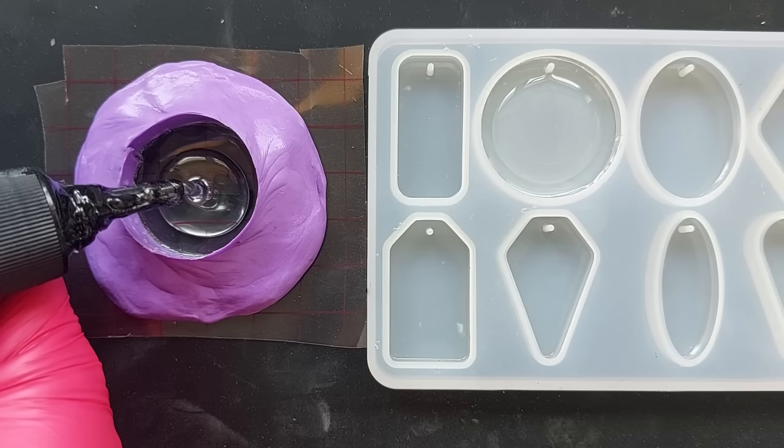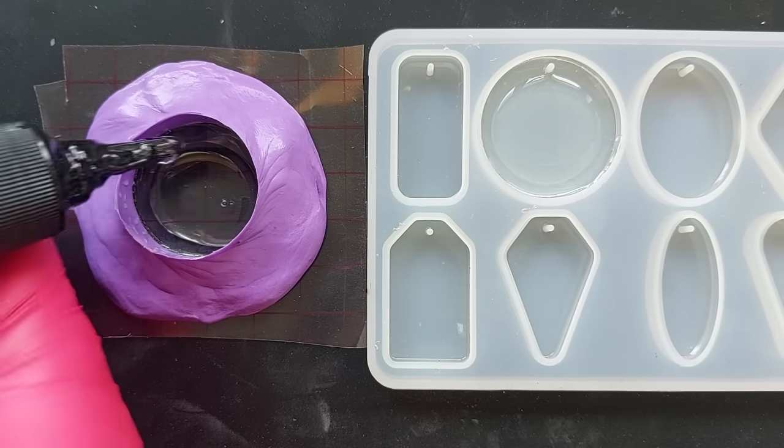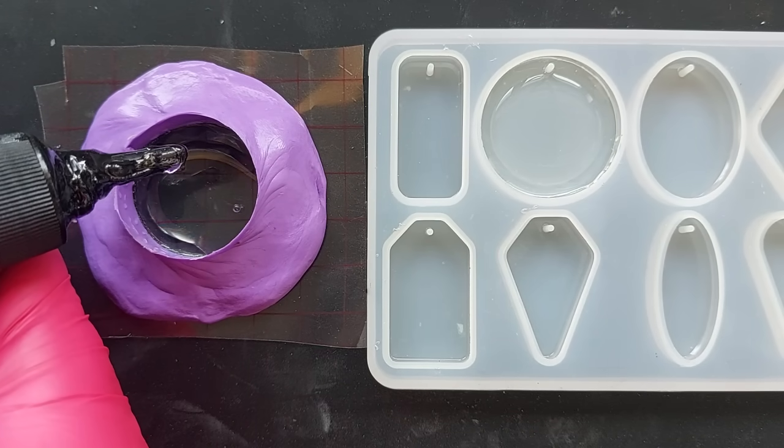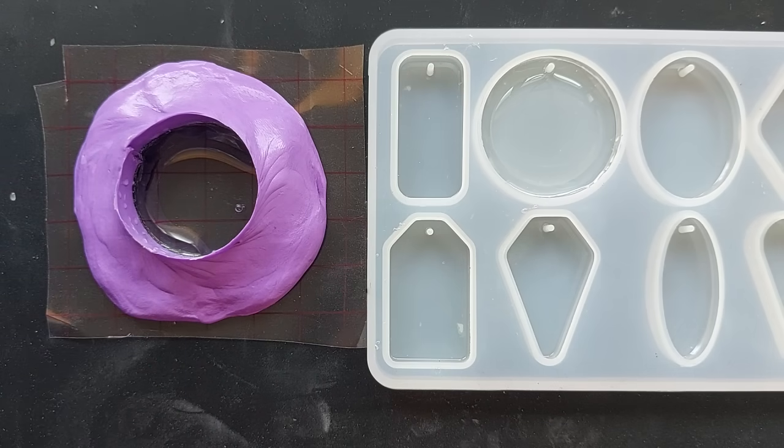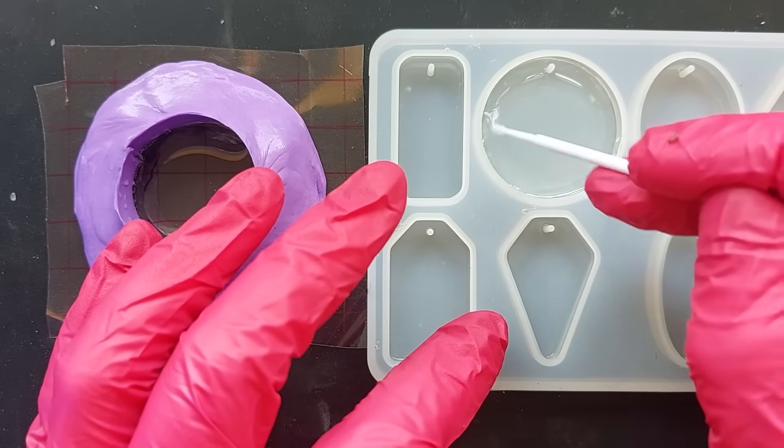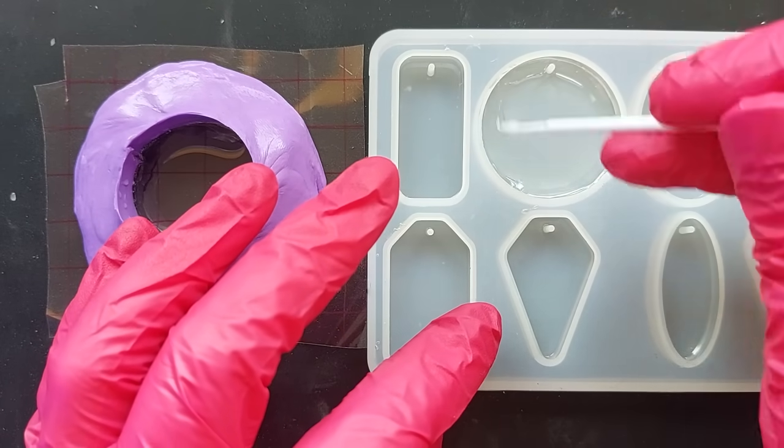So I always do a layer first, cure it and then I pour in the little layer that the inlay is going to go into and you see me here just going slowly, making sure that I don't pour too much. I do use my tool to make sure it goes all the way to the edges and then both of these go back under the UV light.